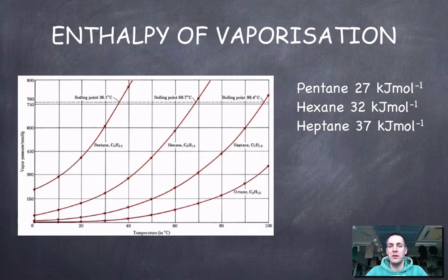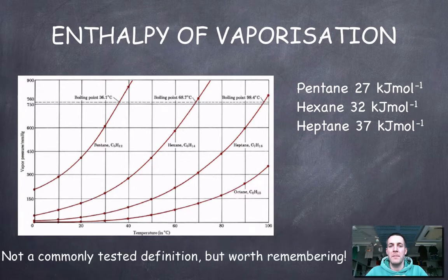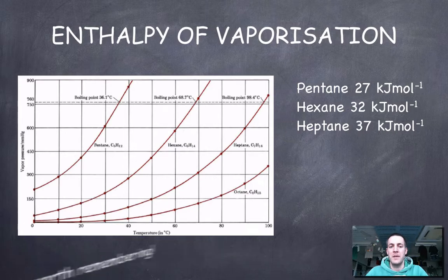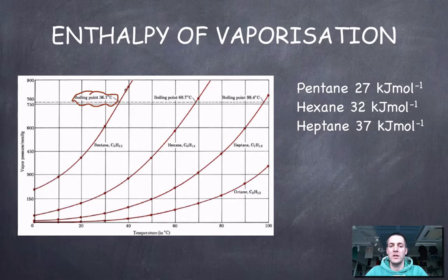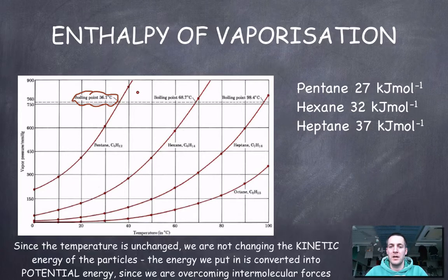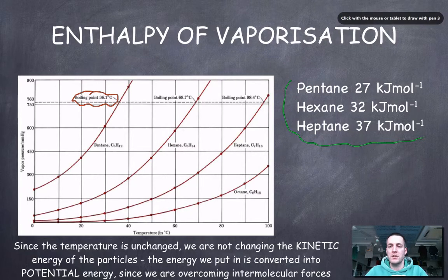Let's link everything we've covered to the enthalpy of vaporization. The enthalpy of vaporization is the enthalpy change when one mole of a liquid turns into one mole of vapor at its boiling point. For example: how much energy do you need to turn one mole of pentane at 36.1°C into one mole of pentane gas at 36.1°C — changing phase but not temperature. These values are all positive quantities; it is always endothermic.